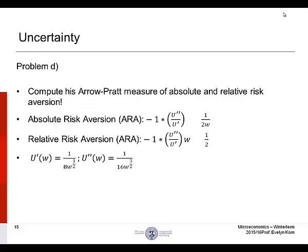Problem D. Compute his Arrow-Pratt measure of absolute and relative risk-aversion. Absolute risk-aversion equals the second derivative of the utility function divided by the first derivative of the utility function times negative 1. Relative risk-aversion equals the second derivative of the utility function times negative 1 and times wealth, or W. So the only difference between absolute and relative risk-aversion is that you multiply by W, which causes the W in the denominator to drop out. To summarize, the greater the person's risk-aversion, the greater their Arrow-Pratt measure of relative risk-aversion is.